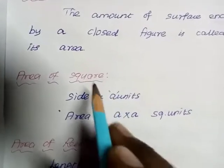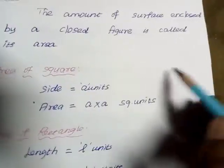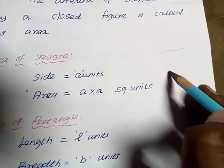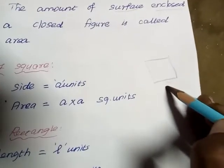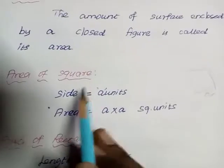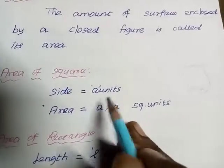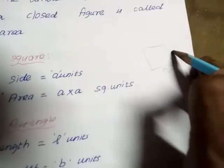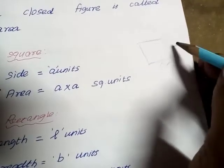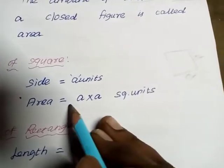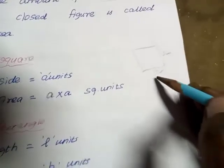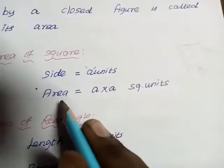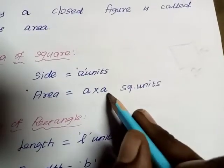Now, area of square. We know a square is a four-sided figure and all sides are equal. We take the side of a square as 'a' units. So area of the square equals side into side, that is area equals a into a square units.